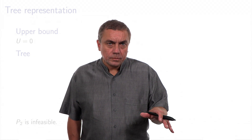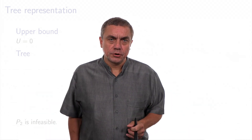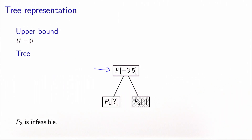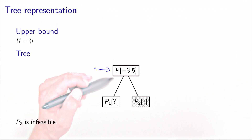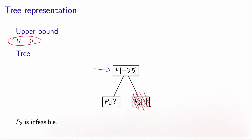It is useful to gather all the information we have calculated so far into a tree representation. We have a node corresponding to the original problem with a lower bound of minus 3.5, shown in square brackets. We have divided P into P1 and P2. Since P2 is infeasible, we remove it from the tree. The upper bound remains at zero.